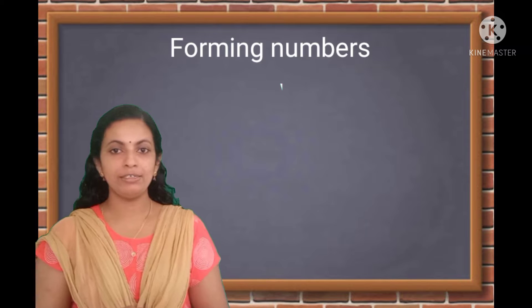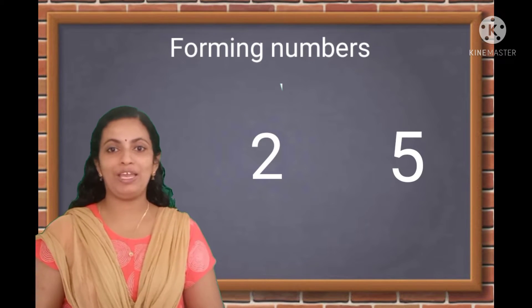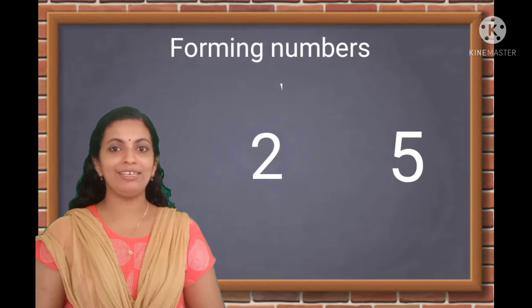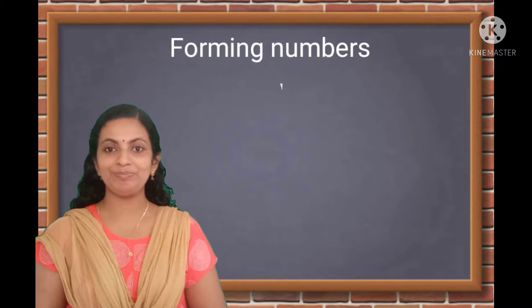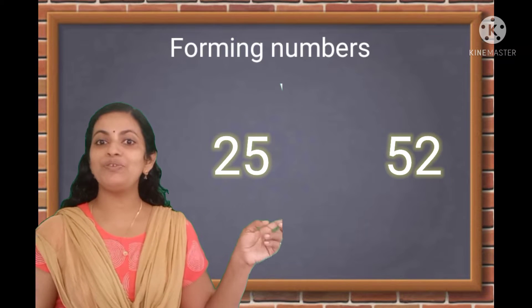Are you ready? See, here are two digits, 2 and 5. Can you make numbers using 2 and 5? Yes, Mono, it's 25 and 52.